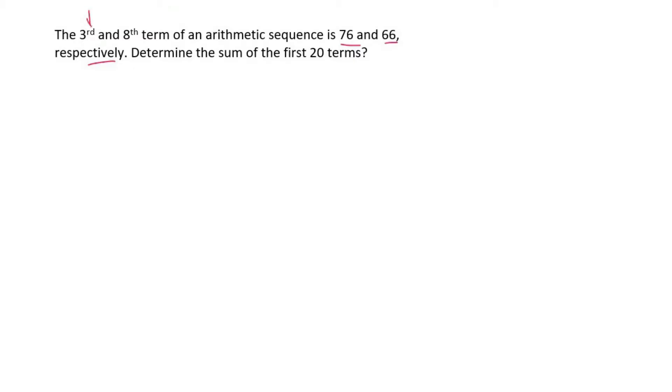They're telling us that term 3 is 76, so T₃ is 76, and term 8 is 66. So it's an arithmetic sequence. I'm going to use this formula. We're going to say 76... Actually, let me make this neater.